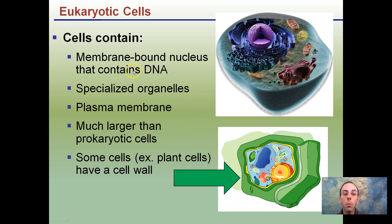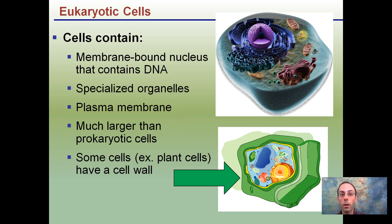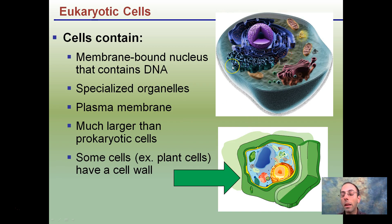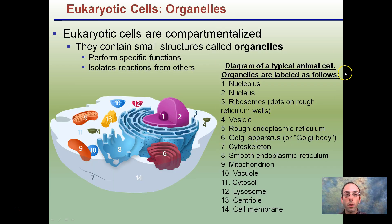So what is a eukaryotic cell? They contain a membrane-bound nucleus, specialized organelles, a plasma membrane, and are actually much larger in comparison to prokaryotic cells. Some cells, for example plant cells, have a cell wall, as indicated here. The key part is these membrane-bound organelles, which makes them distinctly different from the simpler, more primitive prokaryotic cells.